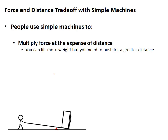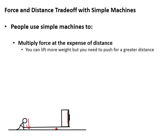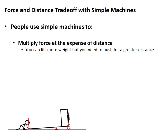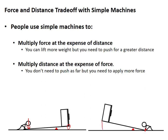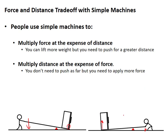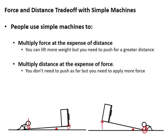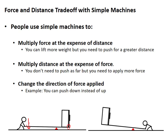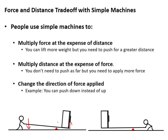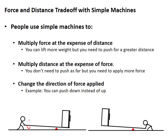We use simple machines to make it easier to lift something — we can multiply our force. This person has to apply less force than the weight of the refrigerator to lift it, but notice he's not lifting it very much. So he's multiplying his force in and getting more force out. We could also do the opposite: apply force over a small distance and get a large distance out, though that requires much more force input. You can also change the direction — applying force down while the fridge moves up.